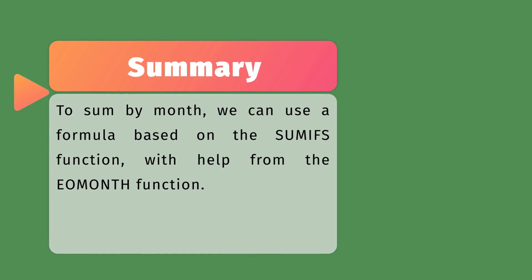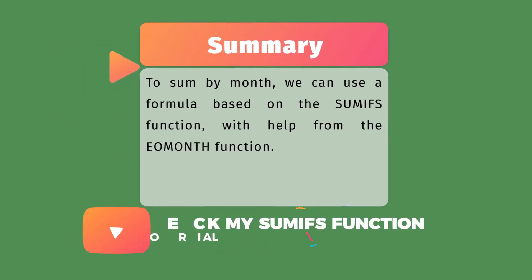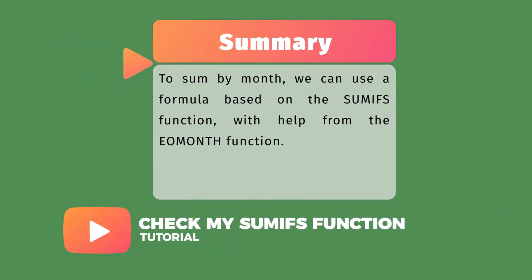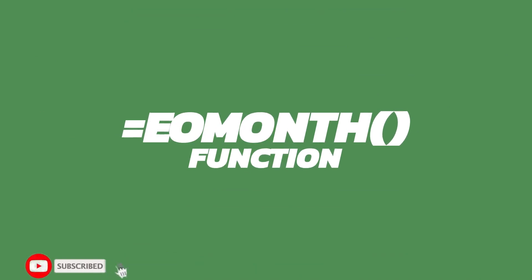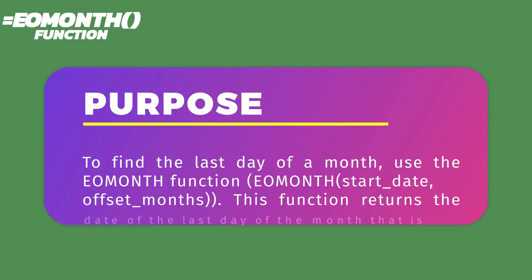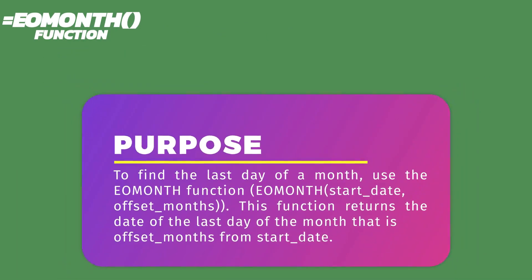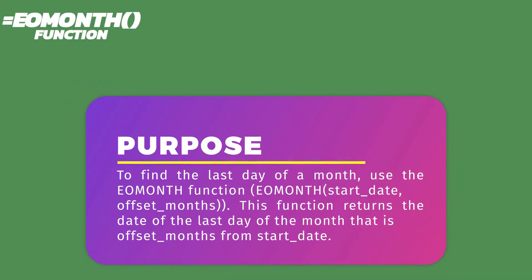You may check my previous tutorial to understand the SUMIF function from the suggested video. Let's see how the EOMONTH function works with a simple example. The EOMONTH function is used to find the last day of a month. The function returns the date of the last day of the month which is offset months from the start date.